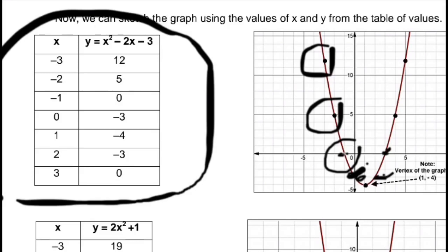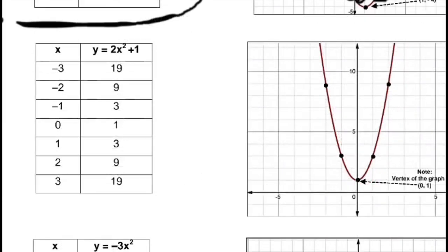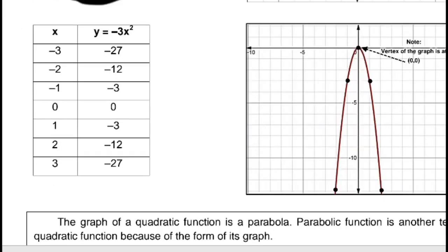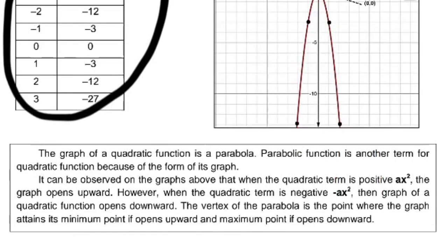The result is a parabola — the graph of the quadratic function. For numbers 2 and 3, plot the points and connect with a smooth curve in the same way. The graph of a quadratic function is a parabola, so parabolic function is another term for quadratic function. When the quadratic term ax squared is positive, the graph opens upward; when it is negative, the graph opens downward. The vertex is the minimum point when it opens upward, and the maximum point when it opens downward.